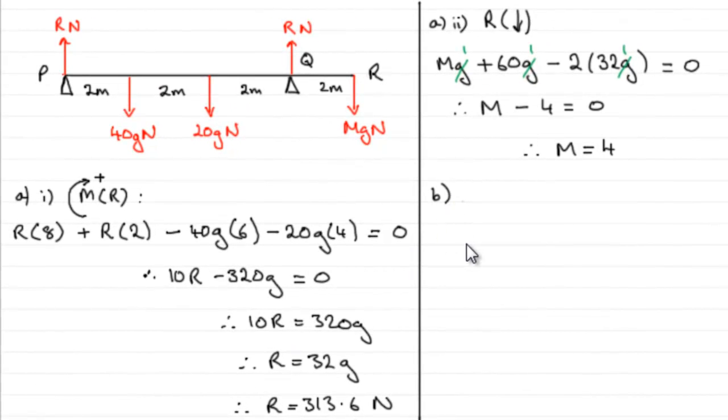And for part B, we've got to state how in our calculations we have used the fact that the child and the block can be modeled as particles. Well, if you've got your child standing here, we just quickly do a quick doodle, and we've got some kind of block here. Then clearly what we've done